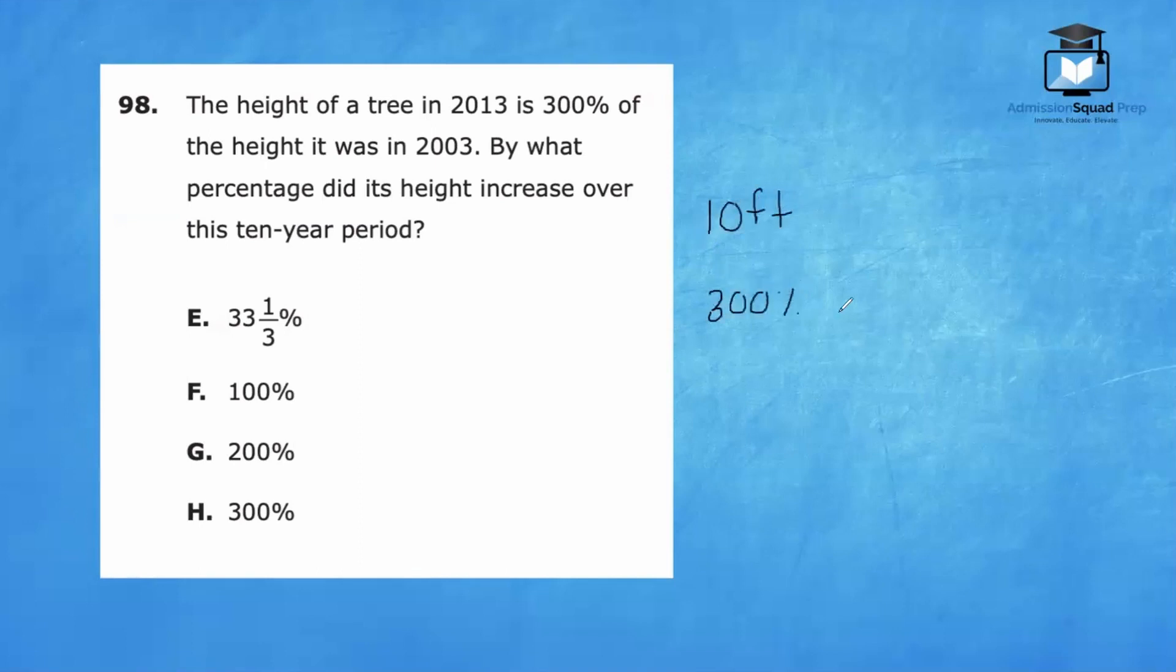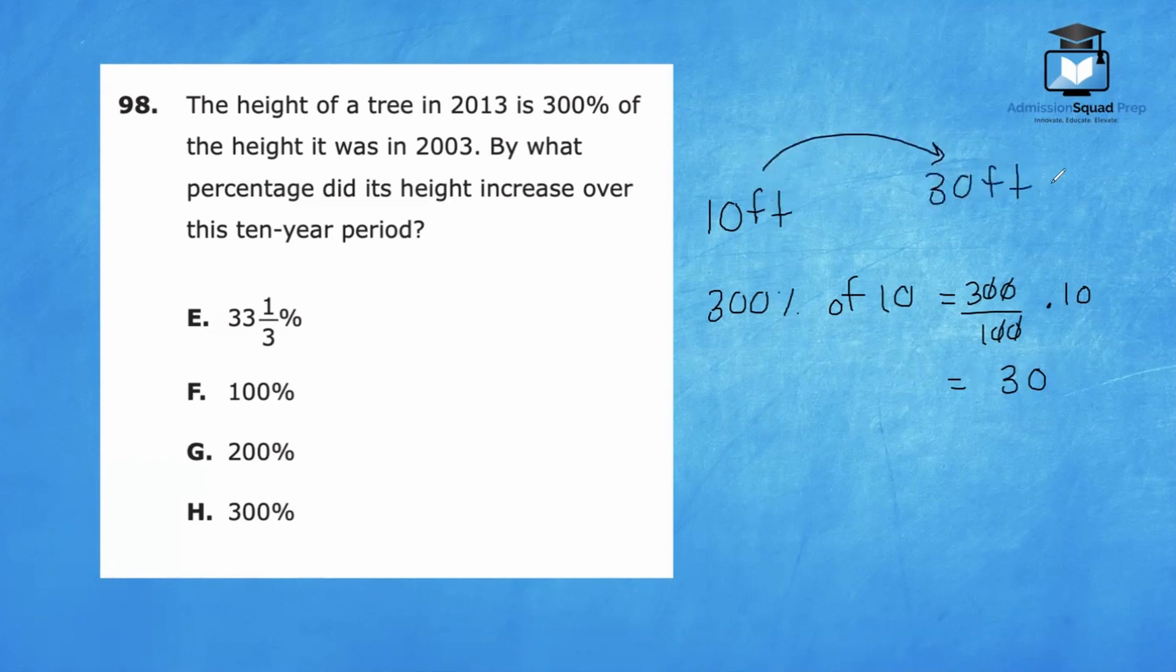300% of 10 feet is the same thing as saying 300 over 100 times 10. These zeros will cancel out. Basically, you're multiplying 3 times 10, which is 30. If the height of the tree was 10 feet in 2003, it will be 30 feet in 2013.